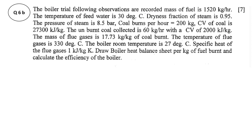In this video we'll try to understand how to draw a heat balance sheet per kg of fuel burned in case of a boiler trial. The observations given are: mass of fuel is 1520 kg per hour, temperature of feed water is 30°C, dryness fraction of steam generated is 0.95, pressure of steam is 8.5 bar, coal burned per hour is 200 kg, calorific value of coal is 27300 kJ/kg, unburned coal collected is 60 kg per hour with a calorific value of 2000 kJ/kg, and mass of flue gases generated is 17.73 kg per kg of coal burned.